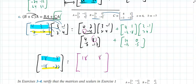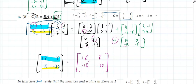Adding BA + CA: [4+14, 8+0; −5+(−13), −17+(−5)] — but let me recheck the top-left entry. We get 4 + 14 = 18, 8 + 0 = 8, −5 + (−13) = −18, −17 + (−5) = −22... correcting: negative 4 plus 12 is positive 8, so [18, 8; −18, −12]. They match — that verifies the distributive property.